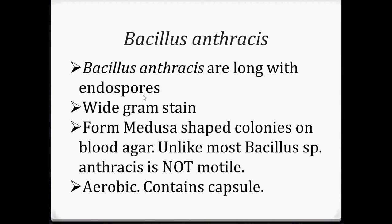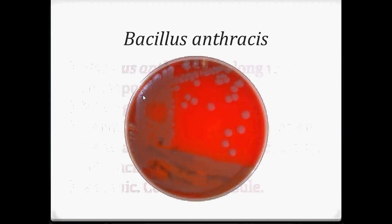The next bacteria is Bacillus anthracis. Bacillus anthracis are long with endospores — resistant asexual spores that develop inside some bacterial cells. They have a wide gram stain and form medusa-shaped colonies on blood agar. Medusas are bell-shaped with tentacles hanging down around a central mouth, like jellyfish. Unlike most Bacillus species, anthracis is not motile. They are aerobic and contain a capsule.